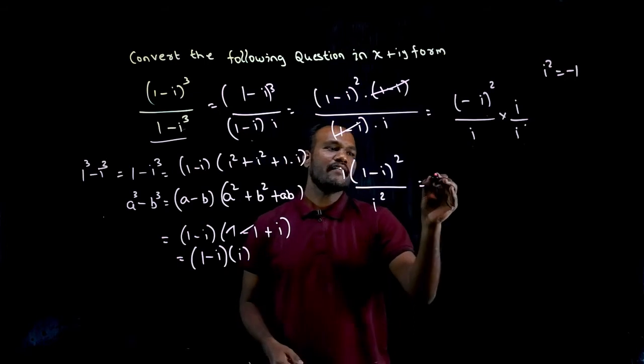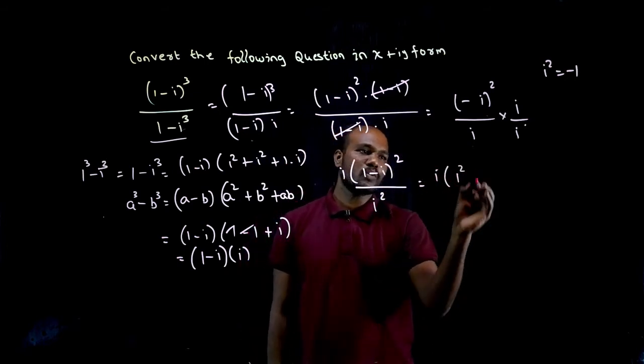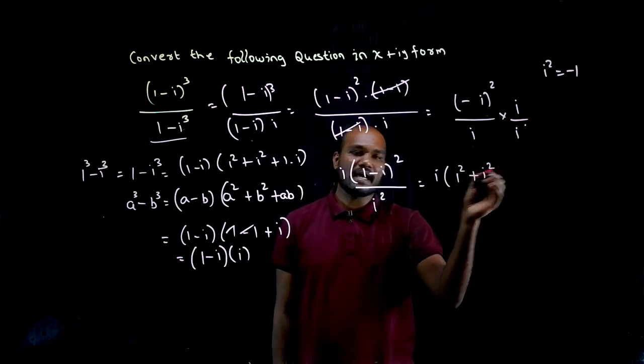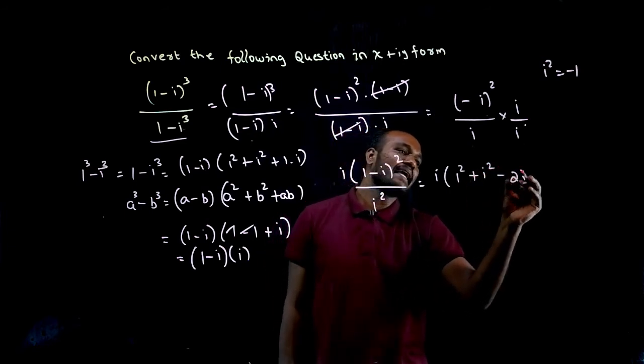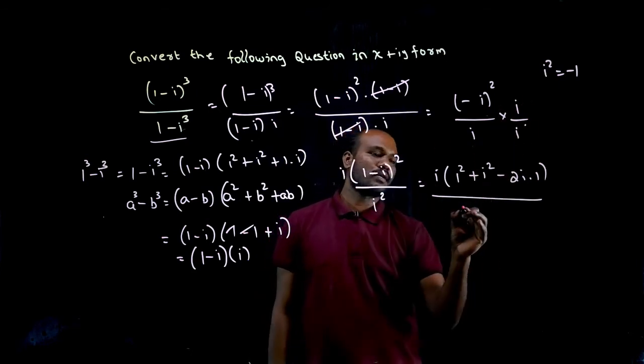Now I have i, I'll keep it as is. (a-b)² is a² plus b² minus 2ab. So i times (1² + i² - 2·i·1). In the denominator I have i², which is -1.